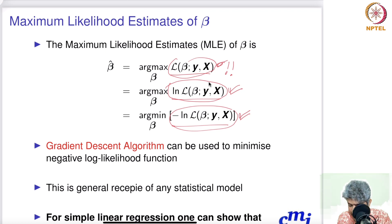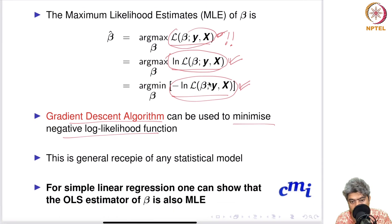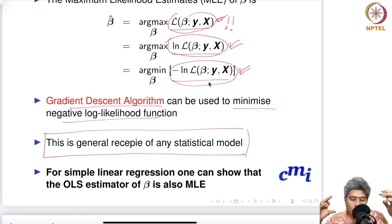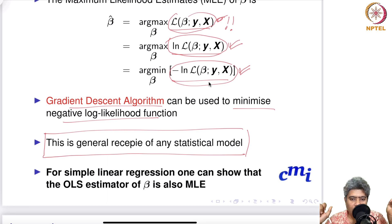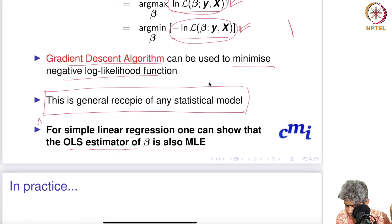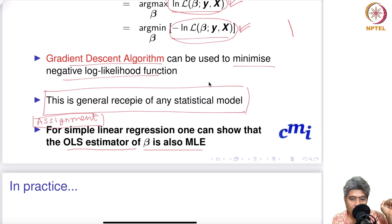The gradient descent algorithm can be used to minimize the negative log likelihood function. This is a general recipe for any statistical model: once you have the statistical model, write down the likelihood function, then write down the log likelihood or negative log likelihood, and pass it to the gradient descent algorithm to estimate beta. For simple linear regression, one can show that the OLS estimator of beta is also the MLE — this is left as an assignment.